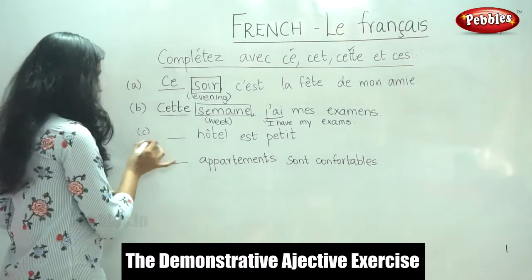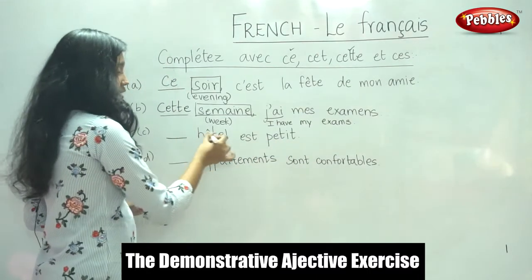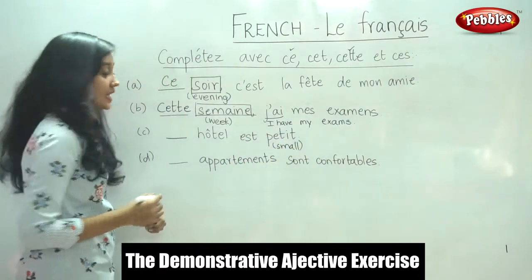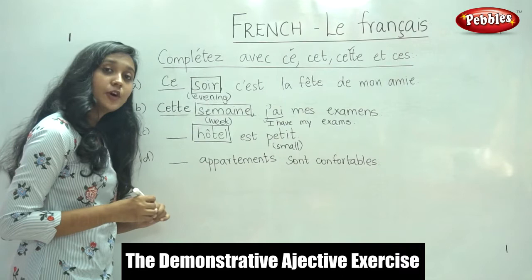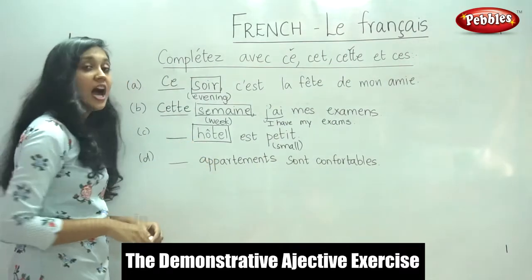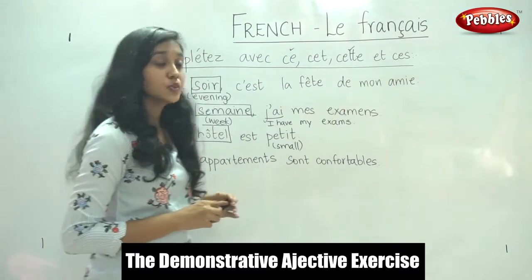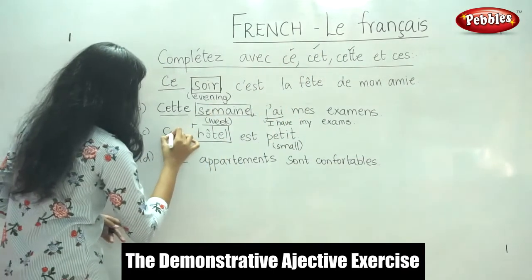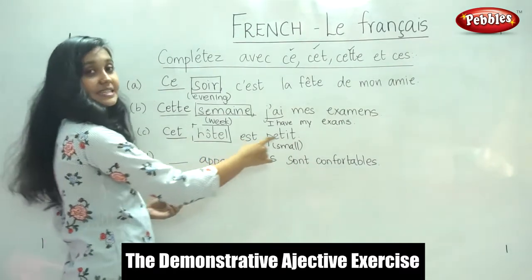The next sentence is: dash hôtel est petit. Dash hotel is small — 'petit' means small. The noun after the blank is 'hôtel'. It is singular and masculine. However, we have an h muet here. So which word would we use in this situation? Yes, we would use 'cet'. Cet hôtel est petit — this hotel is small.